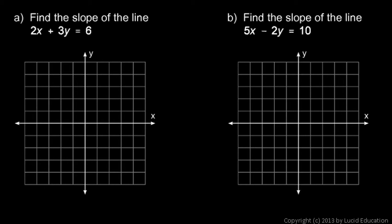Okay, here are two equations given. In both of these cases, we're told to find the slope of the line. And the line is not drawn, but we're given the equation for the line.